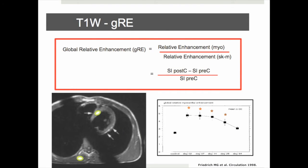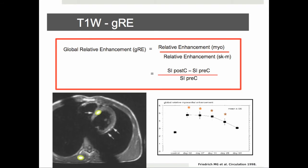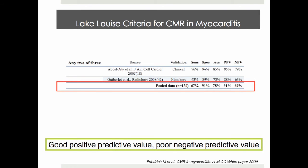Global relative enhancement ratio is based on T1 weighted acquisition before and after administration of gadolinium contrast agent, and intends to capture the greater accumulation of gadolinium contrast agent in the areas of active inflammation. Because it is technically challenging and less reproducible, T1 weighted imaging has been less successfully adopted into the clinical practice. Lake Louise criteria have been shown to have good positive predictive value, meaning when the findings are present, disease can be confirmed. However, the ability to exclude disease, or negative predictive value, is rather poor.